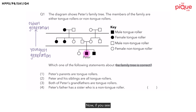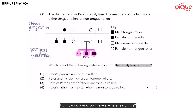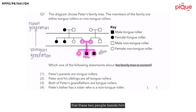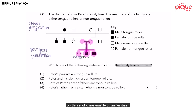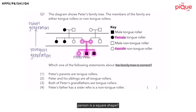Peter is connected to two people just beside him — these are Peter's siblings. We know this because Peter is also connected to two people in the generation above him, which are his parents. Now what about the person on his left? This is the sister. Let's take a look at the key on the right: if the person is a circle shape, she is a female; if the person is a square shape, that person is a male. The person on the right is the brother because he is square shaped.